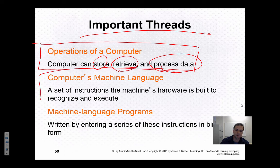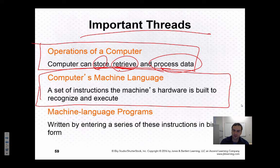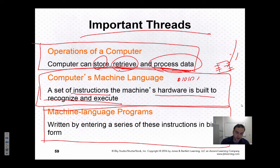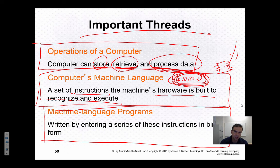The second thing is to do with the computer's machine language. These are very low-level things that do the storing, retrieving, and processing of data in little tiny increments. It's a set of instructions that the hardware is built to recognize and execute. Literally, it's combinations of bits — on and off signals — that get fed into the CPU from a data bus. Machine language programs are files, and the contents of those files are sequences of binary language instructions that get loaded into memory and then executed. It's a series of instructions in binary form.